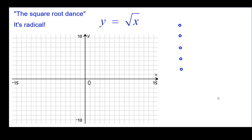And so for the square root dance, we're going to do this. Yes, it's radical. So we'll start with the origin, 0, 0, the vertex.